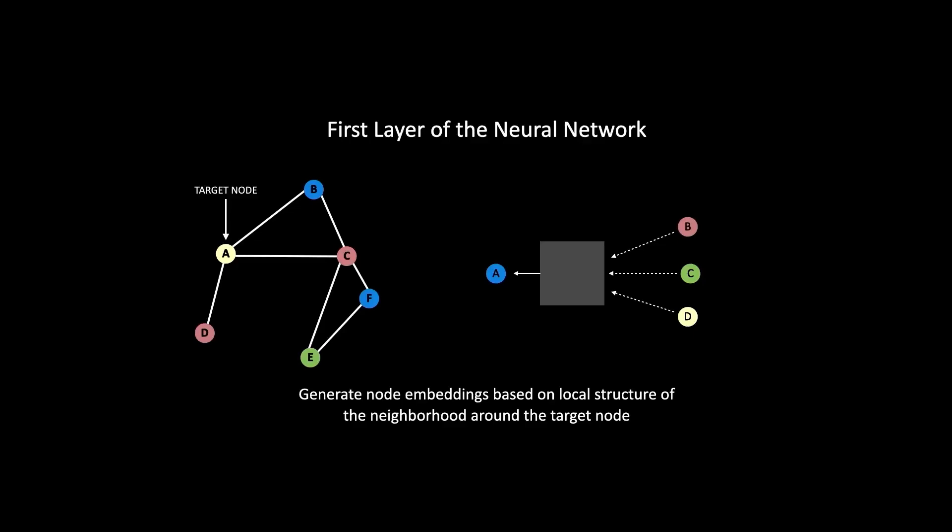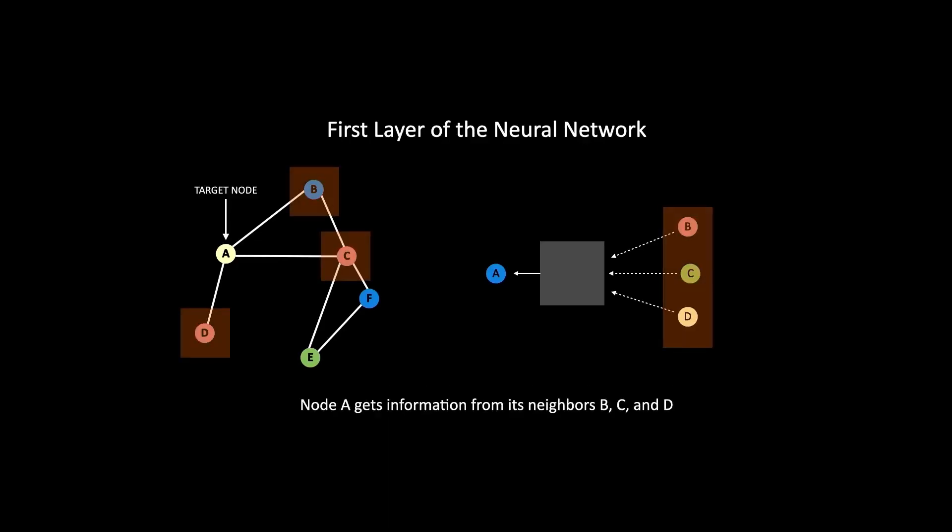Consider the target node A. The immediate neighbors of A are B, C, and D, which means when node embeddings for node A are updated, node A will get information from its immediate neighbors B, C, and D. In the first layer of the graph neural network, the target node A will only get information or messages passed to it from its immediate neighboring nodes — from nodes to which it's directly connected.